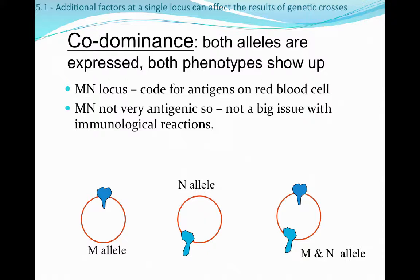The MN locus codes for those antigens on the red blood cell. Those blood cells aren't very antigenic, which means they don't react strongly in the event of blood transfusions, so there's really not a big issue with getting a transfusion and having a severe immunological reaction. That sums up the three main types of dominance as a review.